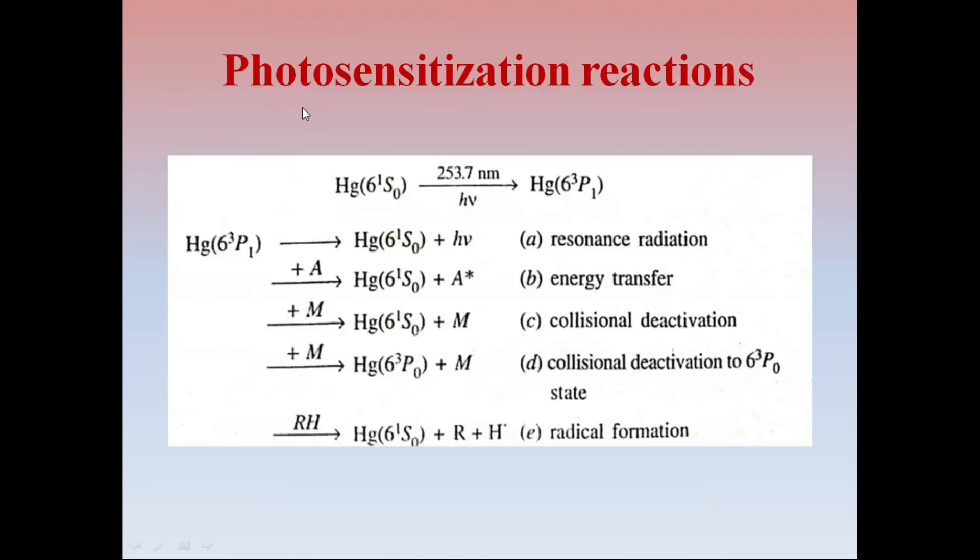Now, photosensitization. Photosensitization reactions which we have already seen in uranyl sulfate dosimetry. In uranyl sulfate dosimetry, the uranyl ion UO2 2+ acts as a photosensitizer. That means it absorbs the radiation and gets to excited state, and these energies it transfers to a reactant molecule.